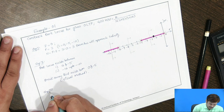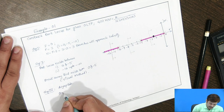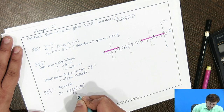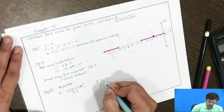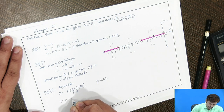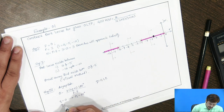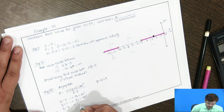Step number three: find the asymptote angles using θ = ±(2Q+1)×180° / (P−Z). In this case P−Z = 3, so we select Q = 0, 1, and 2. Placing Q = 0 gives θ₁ = 60°. Placing Q = 1 gives θ₂ = 180°. Placing Q = 2 gives θ₃ = 300°.